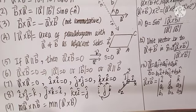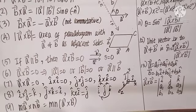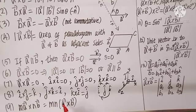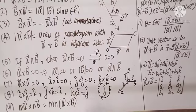When I have M times A vector cross N times B vector, where M and N are non-zero scalars, I can keep M and N outside, or combine them with A vector, or combine with B vector in any way I want. This is scalar multiplication in cross product.